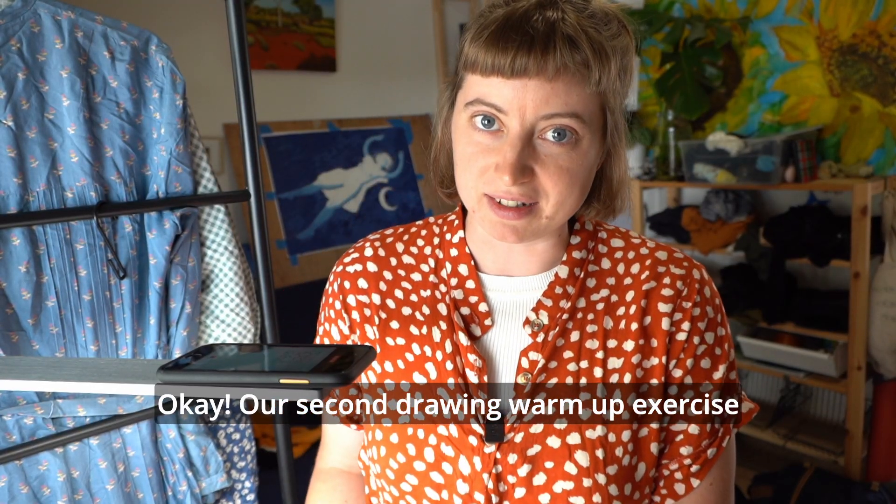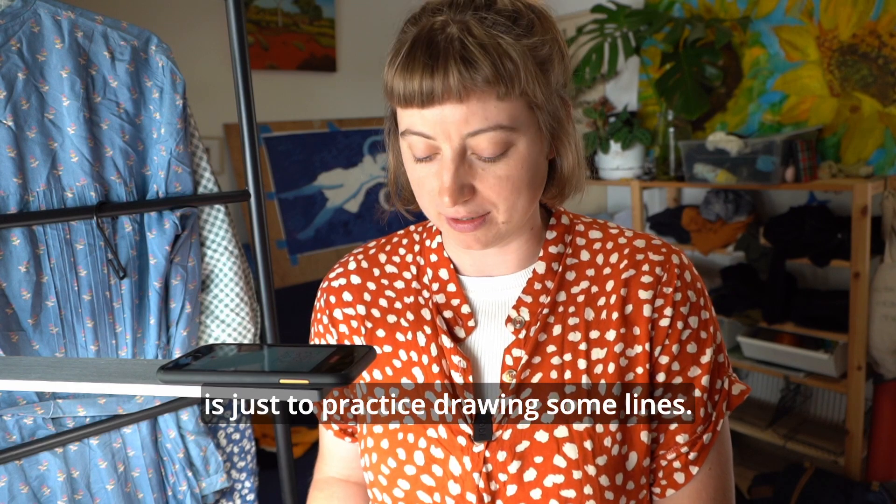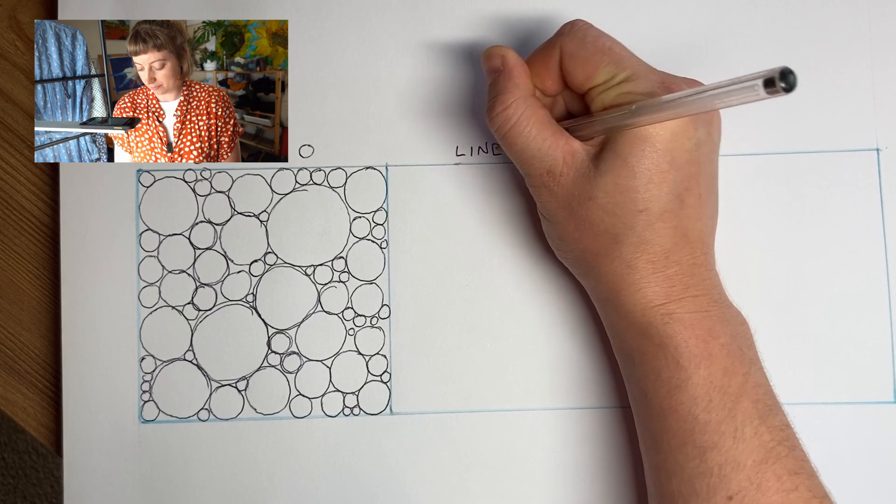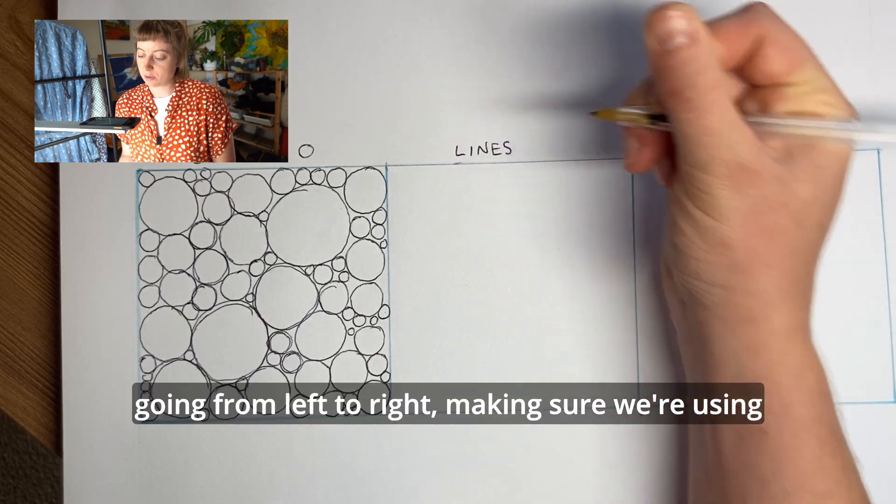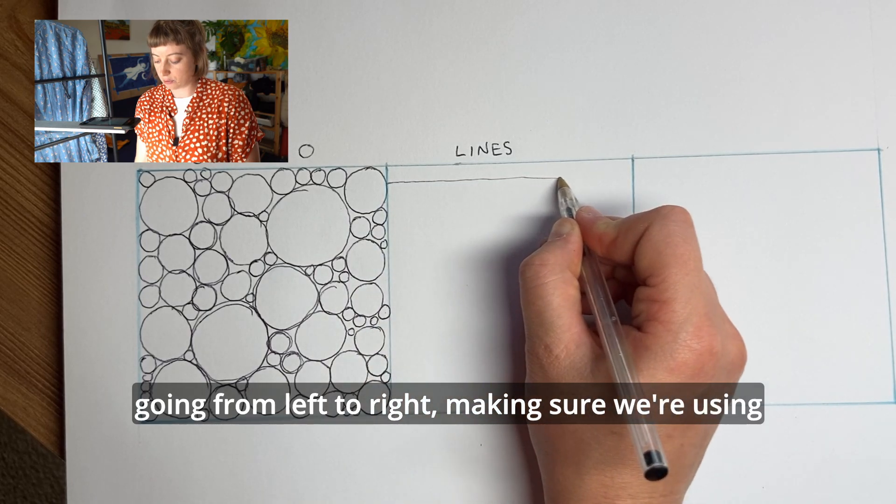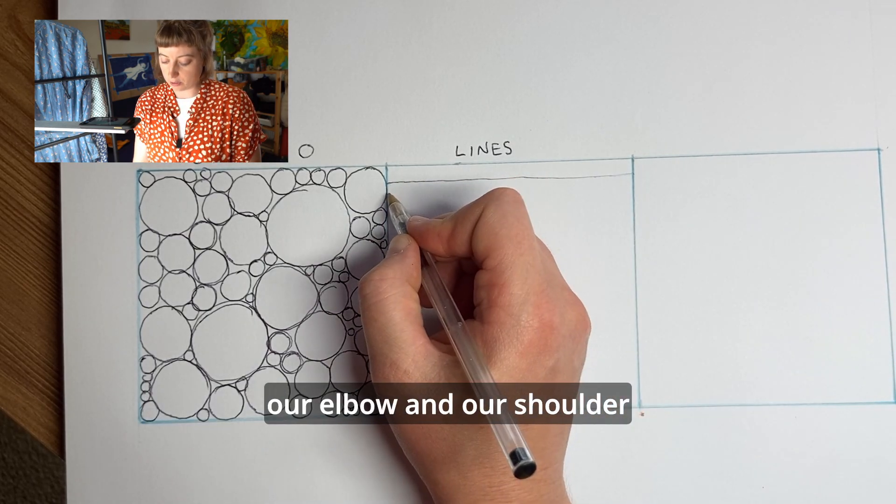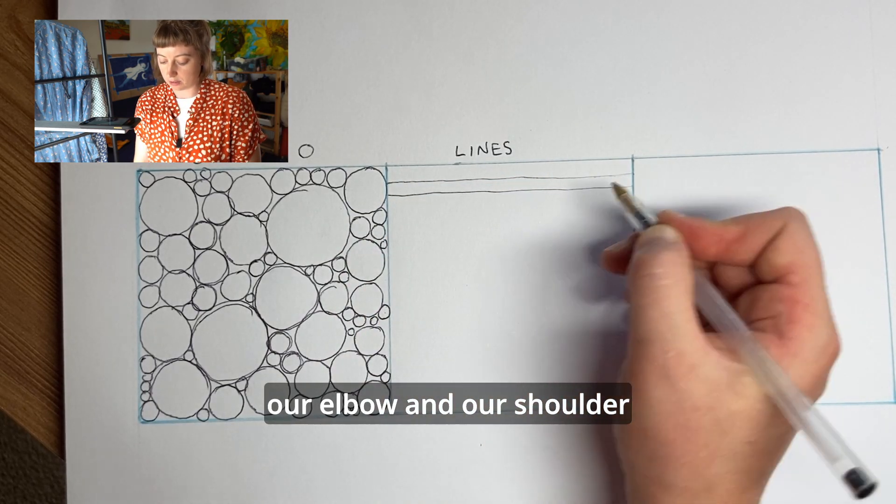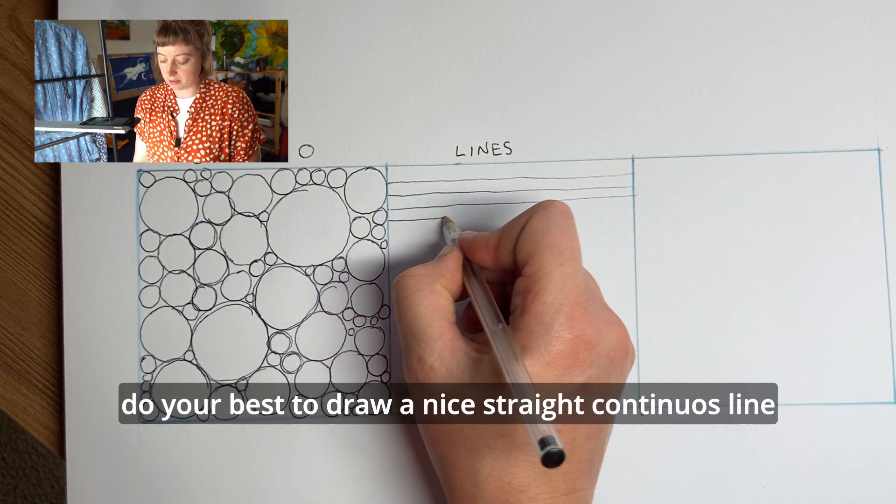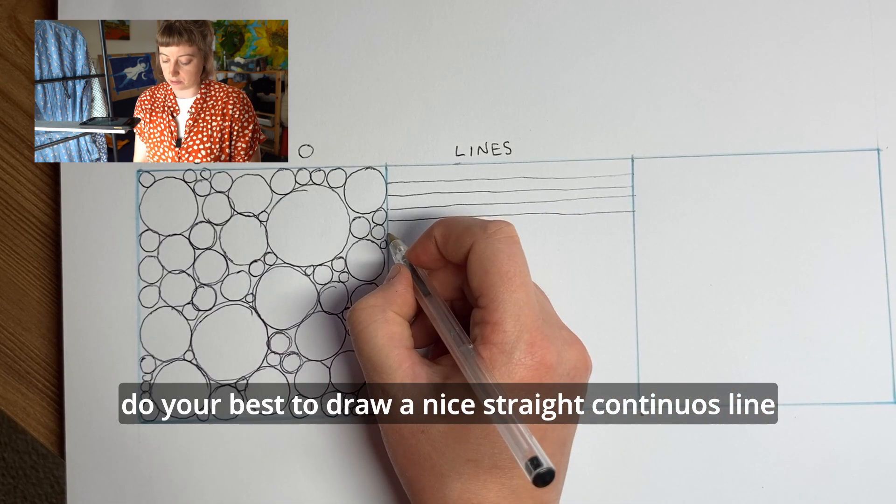Our second drawing warm-up exercise is just to practice drawing some lines. We're going from left to right, making sure we're using our elbow and our shoulder. Do your best to draw a nice straight continuous line.